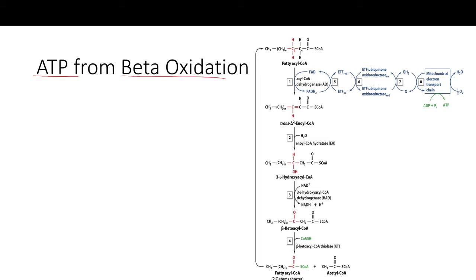In beta oxidation, we cleave two carbons off the chain in each round in order to make acetyl-CoA. We also generate one molecule of FADH2 and one molecule of NADH for each cycle. So the first thing to ask yourself is: how many rounds of beta oxidation do we undergo for acyl chain degradation?